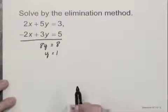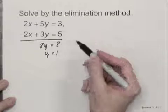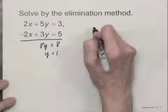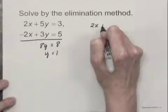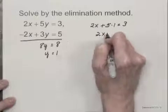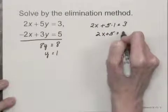And now I can substitute 1 for y in one of these two equations to find x, and let's just pick the first equation to use. I would have 2x plus 5 times 1 equals 3, or 2x plus 5 equals 3.